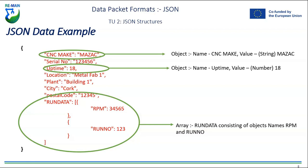Here's an example JSON data packet from a CNC machine. You have the CNC make 'Mazak' — that's an object with name 'cnc_make' and value string 'Mazak'. You have the uptime of the machine itself, so object name 'uptime', value is a number: 18. Then you have an array called 'run_data' consisting of objects with names 'rpm' and 'run' with numeric values. Without needing to understand binary or specialized computer codes, this is readable by humans — and if you know CNC machines, you can make sense of what the data represents.